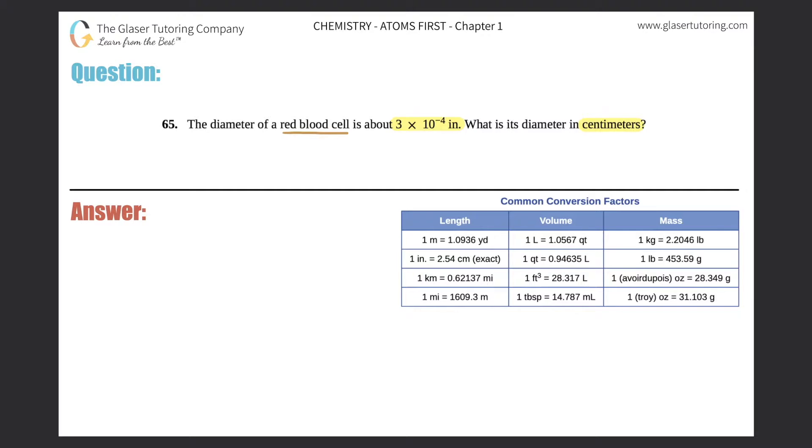It's an erythrocyte. Don't worry about that, that was just a fun little tip. Anyway, we have to convert from inches to centimeters. They talk about the diameter of a red blood cell which is 3 × 10⁻⁴ inches, and they say what is this diameter in centimeters.